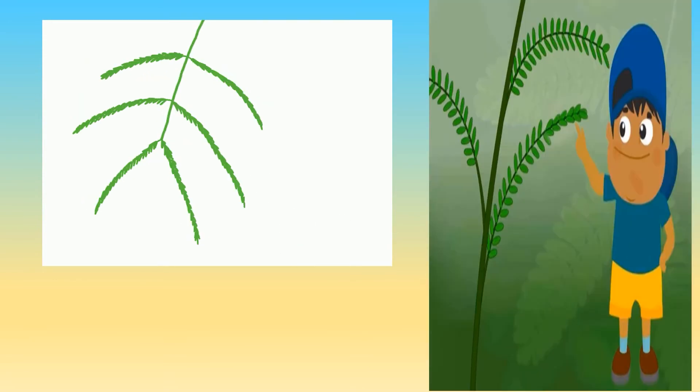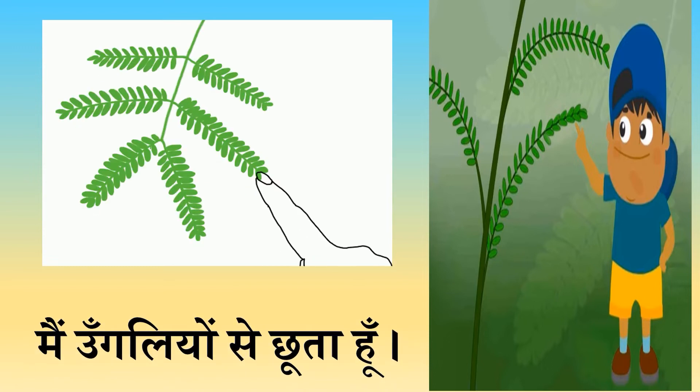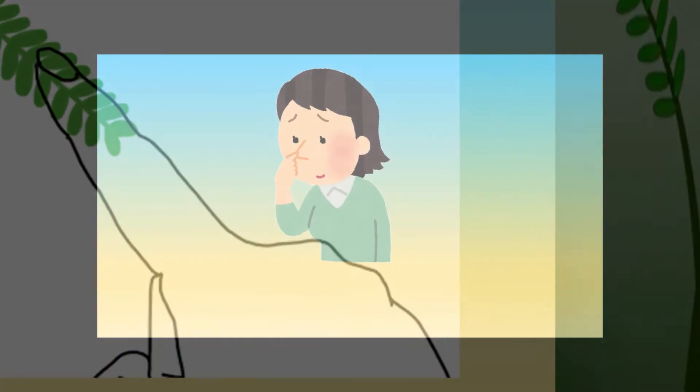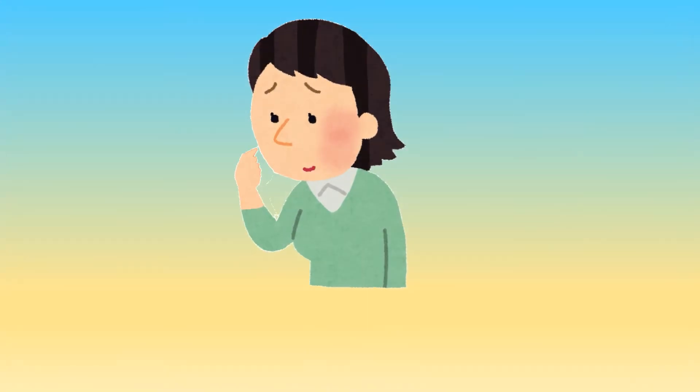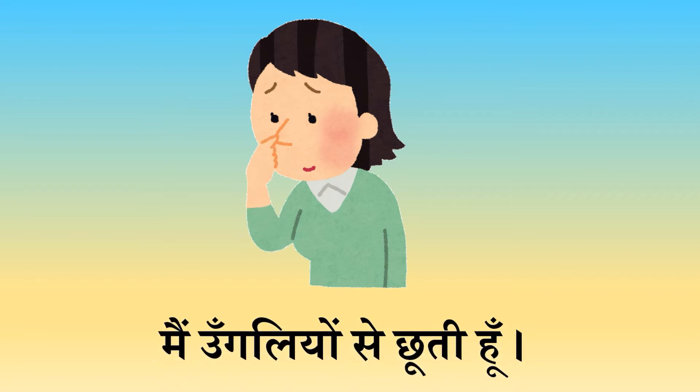इस चित्र में क्या है बच्चो? हाँ, पत्ते हैं, और एक उंगली भी है ना? ध्यान से देखिए। हम उंगलियों से छूते हैं। यहाँ लड़का बोलता है: मैं उंगलियों से छूता हूँ। लड़की बोलती है: मैं उंगलियों से छूती हूँ।